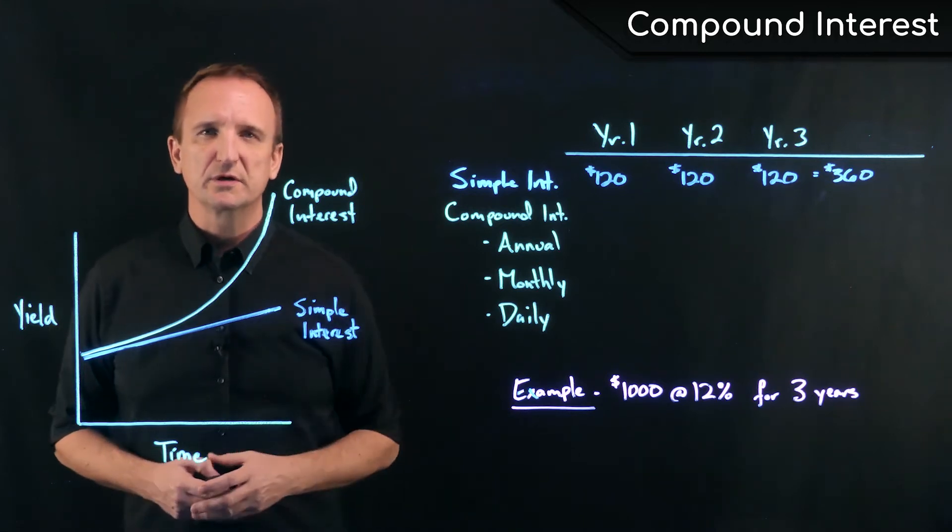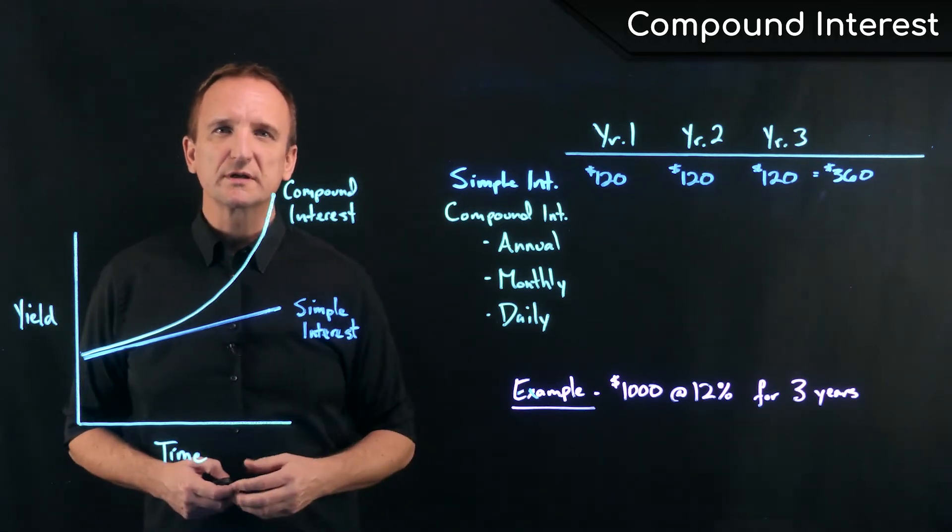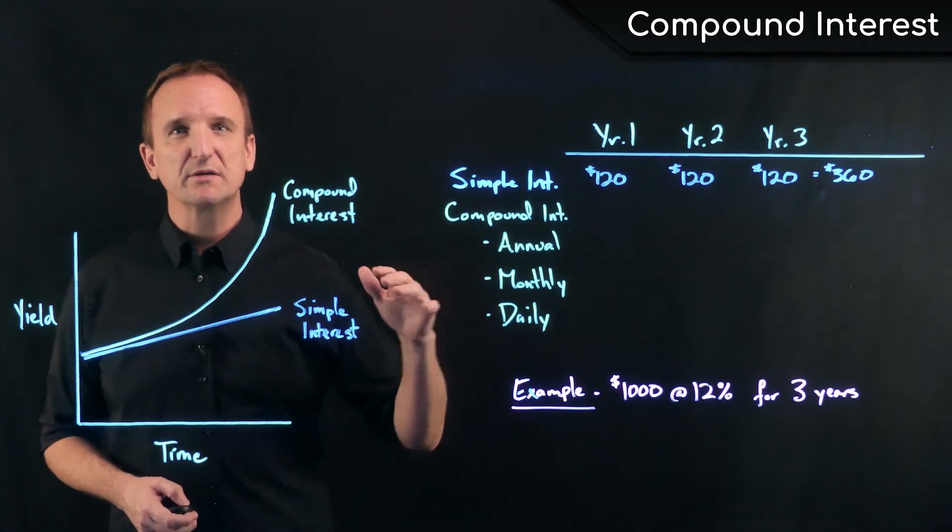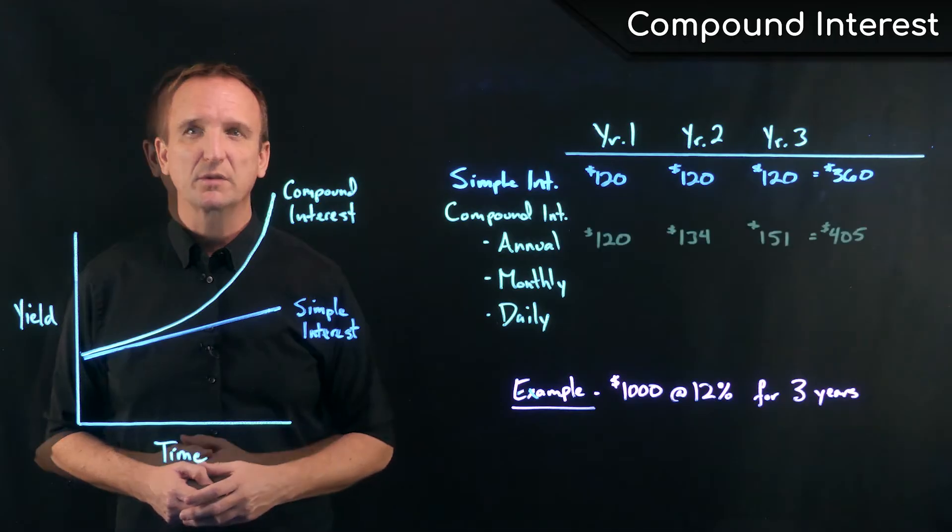In compound interest, each time we earned interest, it's added to the original principal. So future interest payments are based on the sum of both. Let me show you how that works.